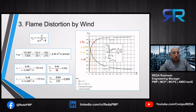The gas velocity is calculated using volumetric flow rate over the cross-sectional area. We can determine the volumetric flow rate from the mass flow rate, and the cross-sectional area from the flare diameter calculated in the first step.